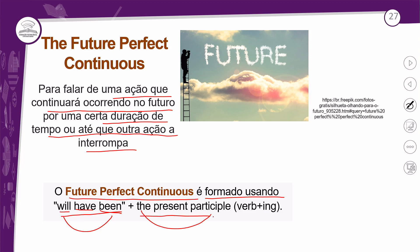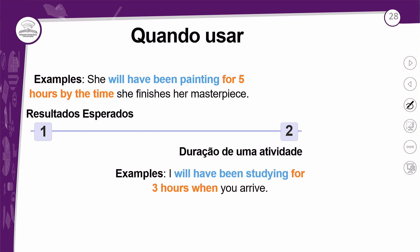Esse verbo principal vem junto do -ing, o gerúndio que você já conhece. Então, esse verbo principal precisa vir com esse sufixo, e você precisa ver como coloca o sufixo no verbo. Tem a regra geral, onde você só coloca o -ing e sai feliz da vida, e tem a regra em que você precisa fazer algumas alterações nos verbos. Vamos para quando usar esse tempo verbal.